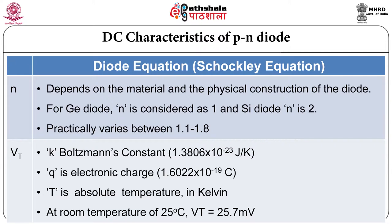The ideality factor n — for germanium it is considered as 1, for silicon it is 2, and practically it varies from 1.1 to 1.8.